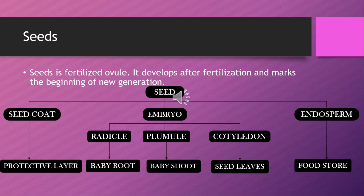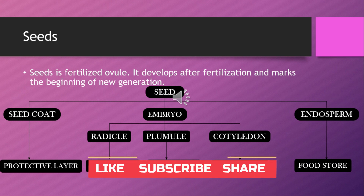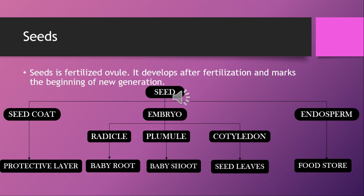After fertilization, the ripened ovary is your fruit and the ovule turns into a seed. A seed has three main parts. First is the seed coat, which is the outer protective covering of the seed. Second is the embryo — it is the baby plant in an inactive stage. The embryo contains the radicle, which is the young root that grows into the root system of the plant.